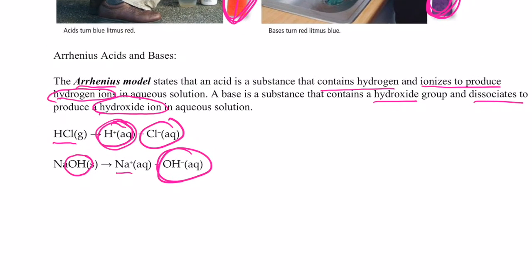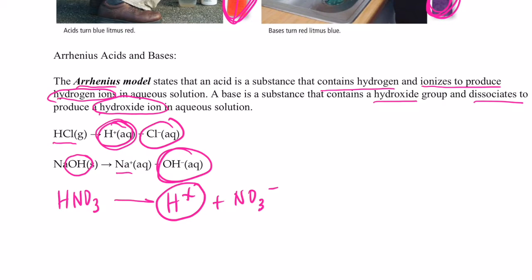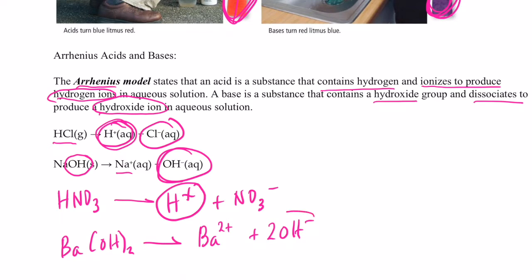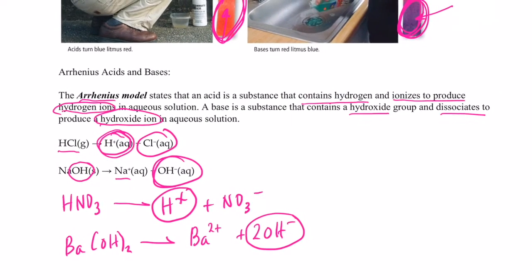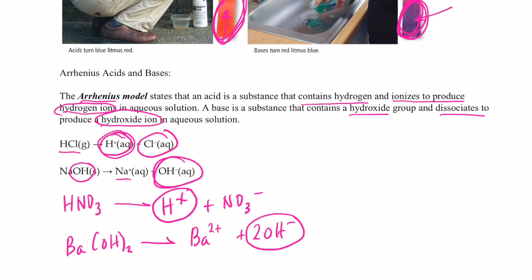A couple more examples: HNO3, nitric acid, dissociates to produce hydrogen ions and nitrate ions — because it produces hydrogen ions, it's an acid. And barium hydroxide, dissolved in water, produces barium ions and hydroxide ions — because it produces hydroxide ions using the Arrhenius definition, we call it a base. That's the most simple definition; it doesn't cover all acids and bases, but it works most of the time.